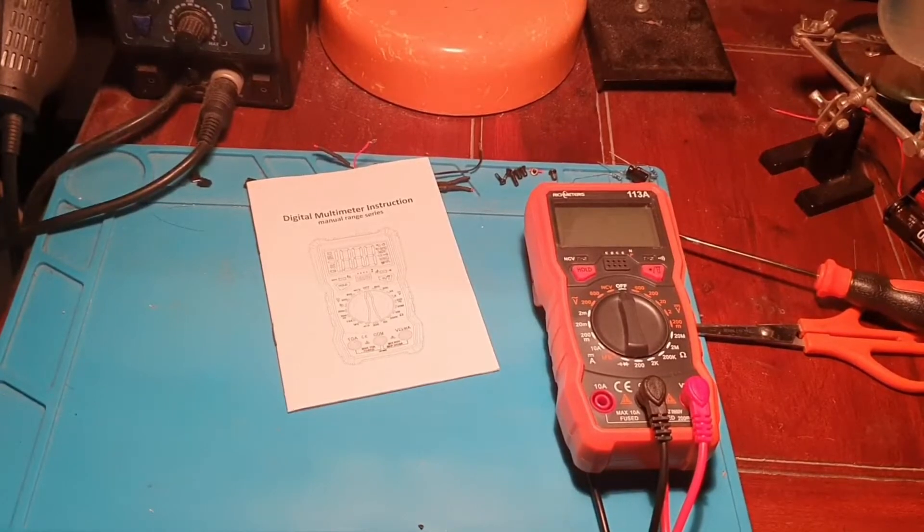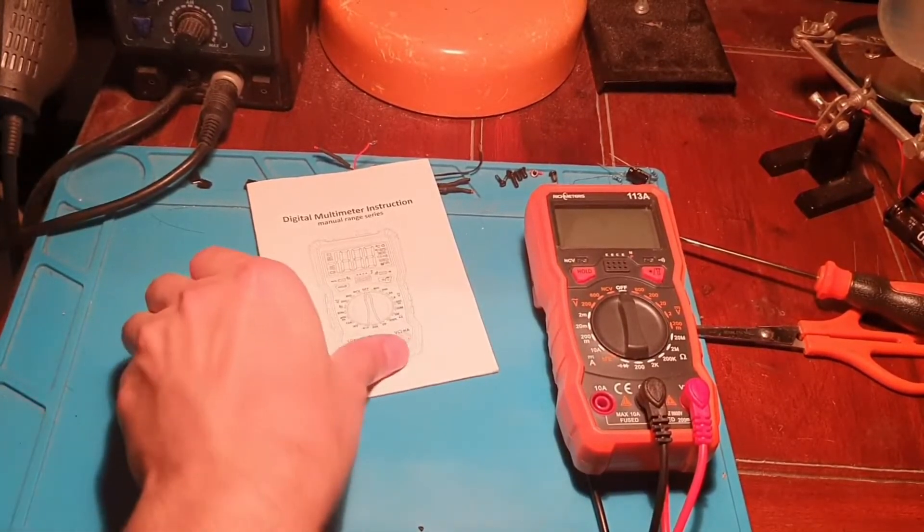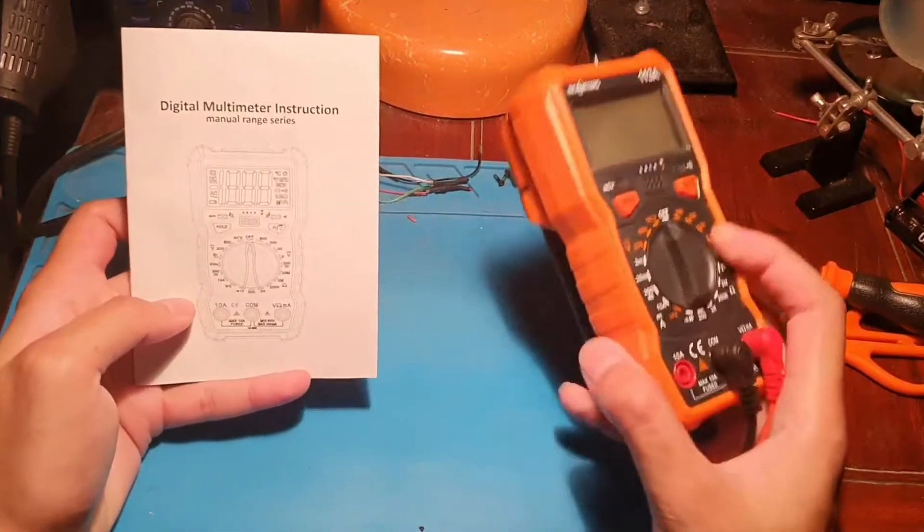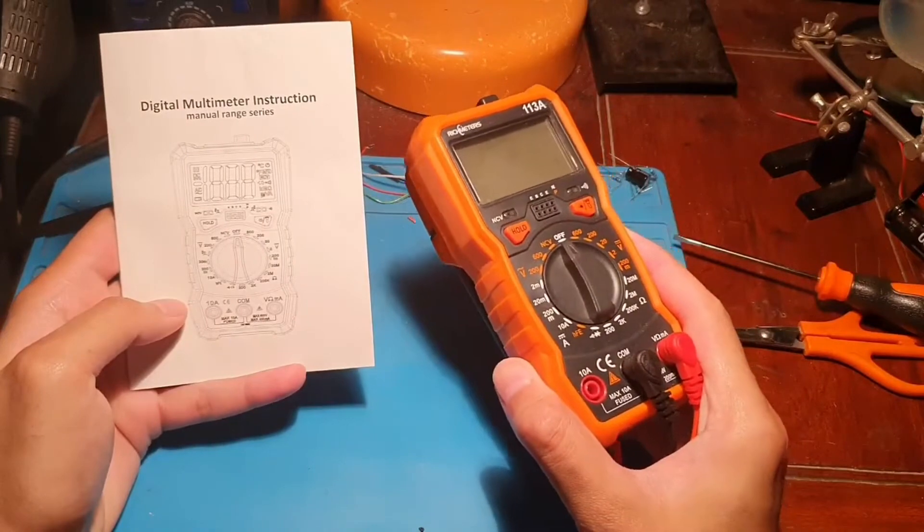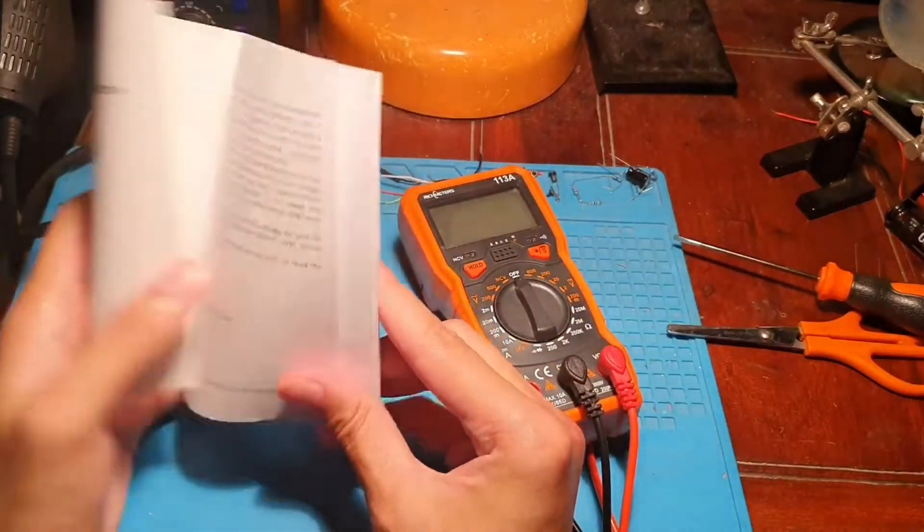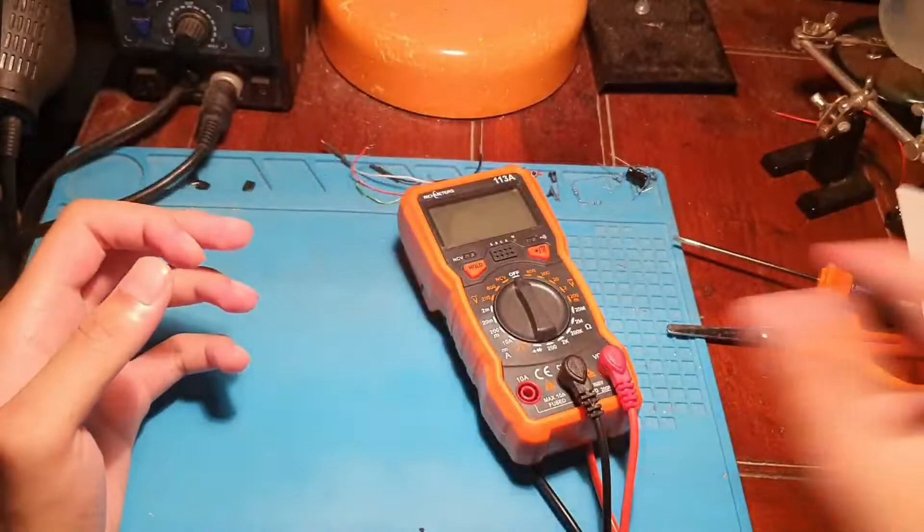Okay guys, this is the Richmeeter 113A. It comes with a manual when I opened the package - a digital multimeter instructions manual, range series.